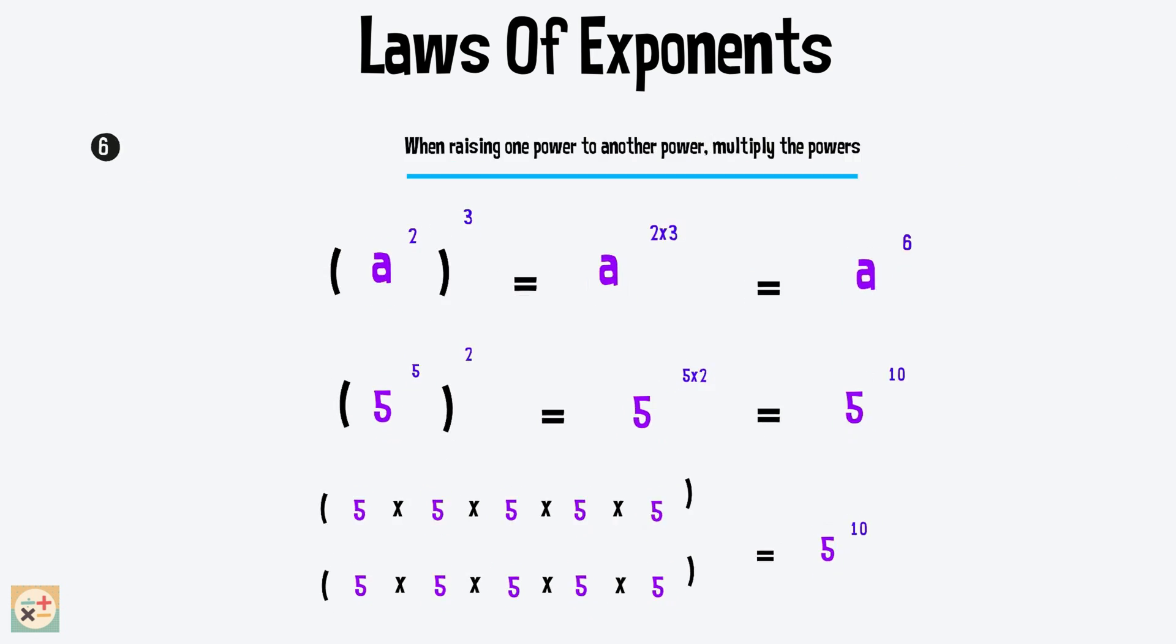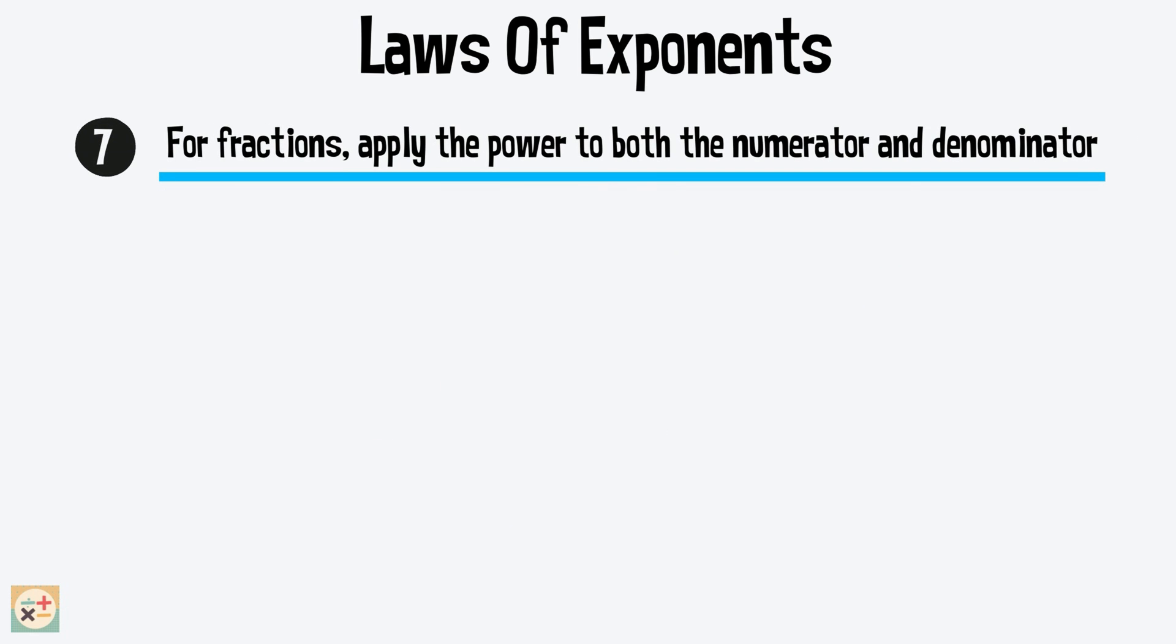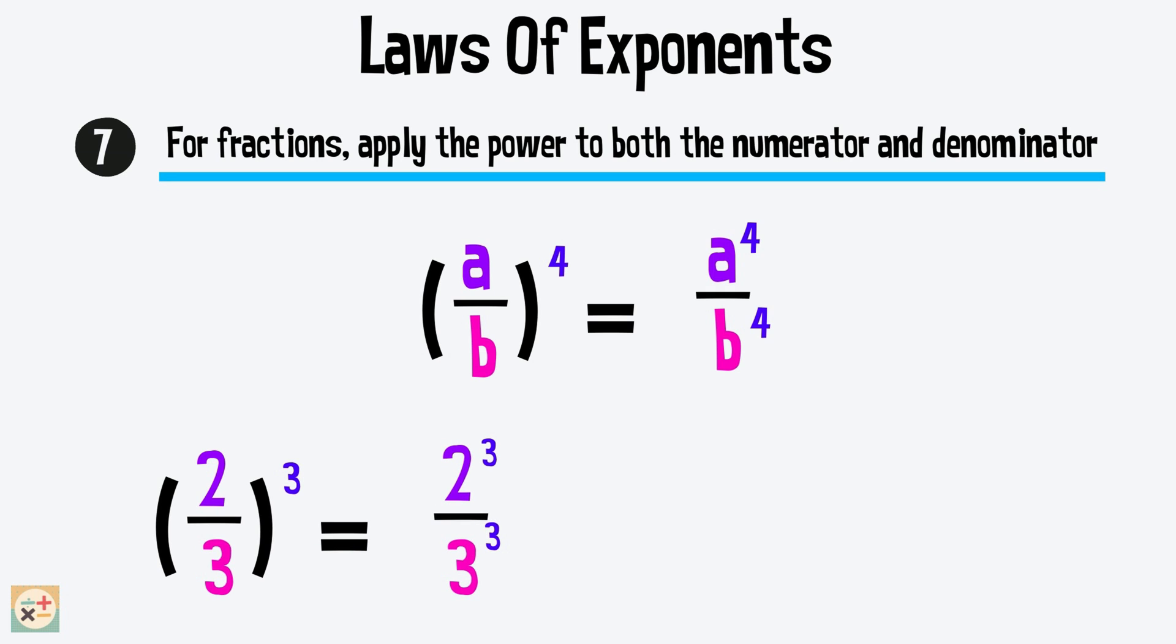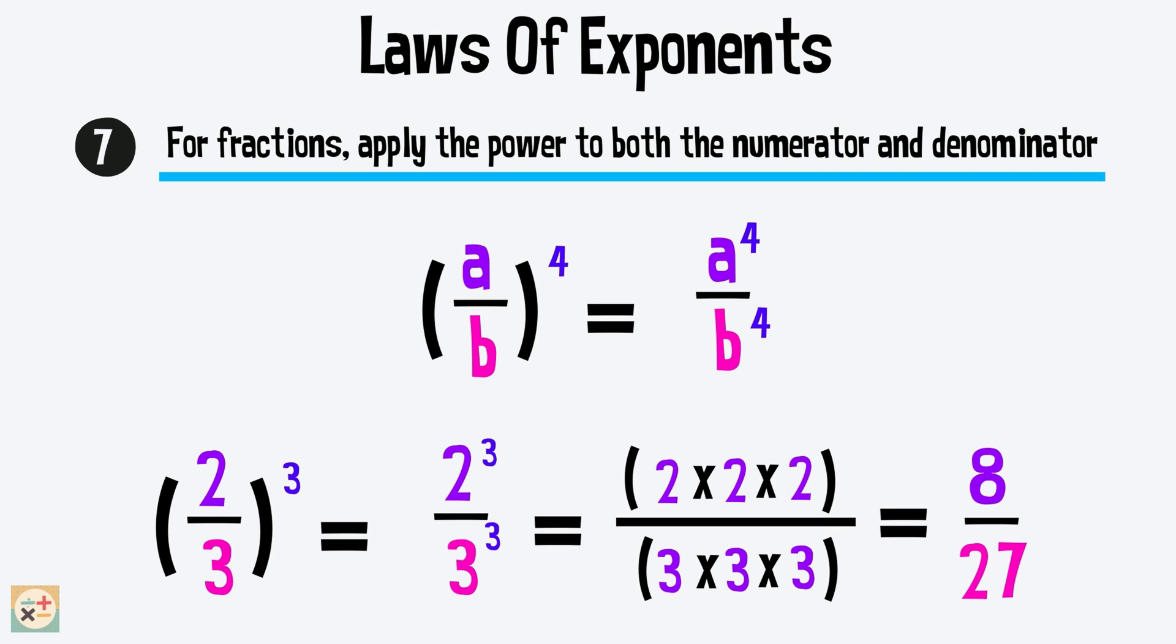Law number 7: For fractions, apply the power to both the numerator and denominator. So here, we can rewrite this and apply the power 4 to both a and b. In this example, we can apply the exponent of 3 to both the numerator of 2 and the denominator of 3. We can then rewrite the fraction without the exponent to understand this further, giving us a result of 8 over 27.